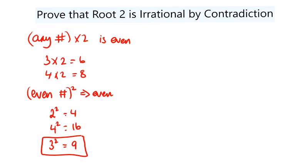They're the two components that we need to use. Let's assume root 2 is rational. So we're going to contradict this. This is the proof by contradiction.